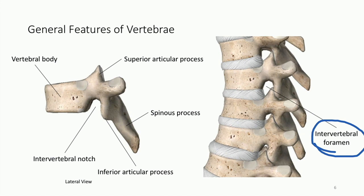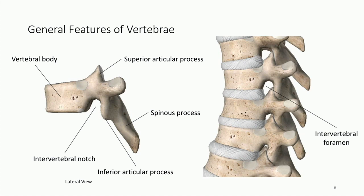When referring to a single vertebra, we call it an intervertebral notch, but typically when thinking about the spinal cord, we refer to the intervertebral foramen. Lastly, one feature that is not bony but is an important part of the vertebral column is the intervertebral disc. Found between each of the vertebral bodies, this disc is made up of fibrocartilage — very stiff, very supportive, and acts like a cushion. However, these discs can have issues as we get older, leading to important clinical significance.